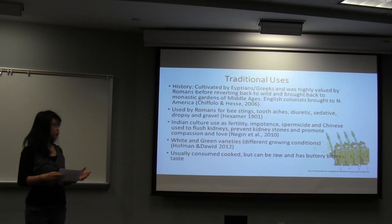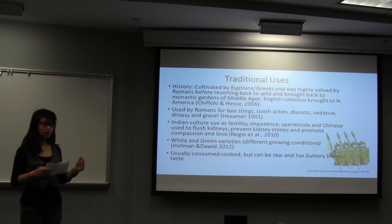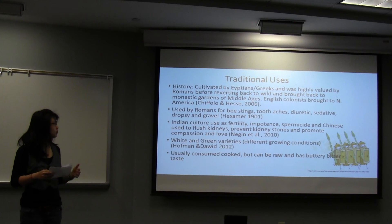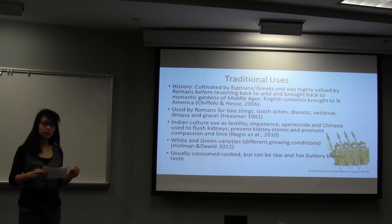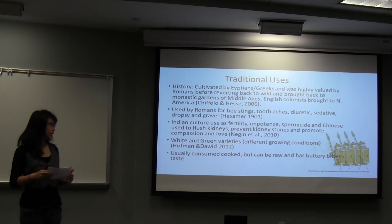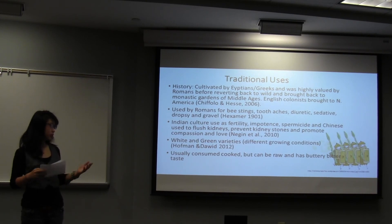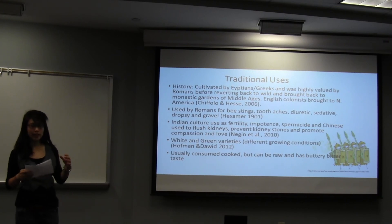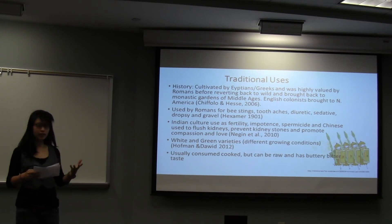Some traditional uses: asparagus was first cultivated by Egyptians and Greeks. The raw variety is known as Asparagus racemosus, which has the most antioxidants and mostly low chemicals in it, but we cultivated Asparagus officinalis for better taste. It was brought to America by the English. The Romans highly prized it for bee stings, toothaches, diuretics, sedatives, dropsy, and gravel. In traditional Indian culture it was used for fertility and as a spermicide — interestingly, all three somewhat cover each other. Chinese medicine used it to flush kidneys and prevent kidney stones. Interestingly, most pharmacists actually kept the base of the asparagus to promote compassion and love, giving the best stocks to their friends.